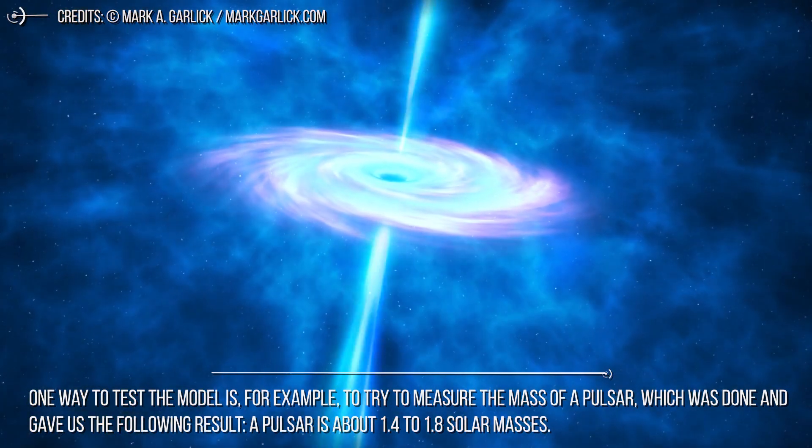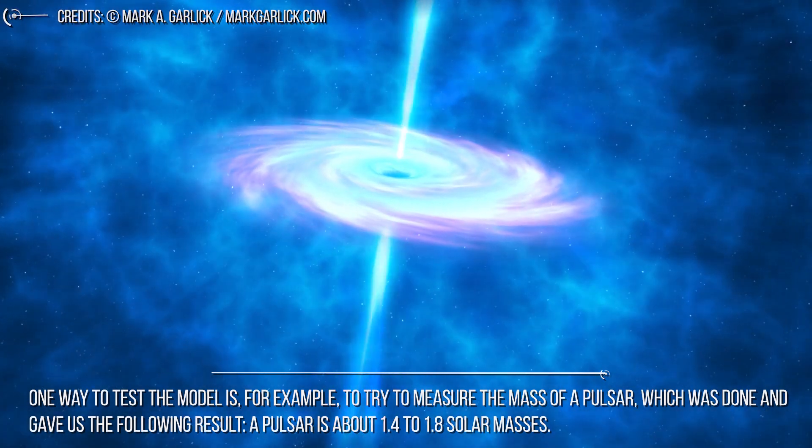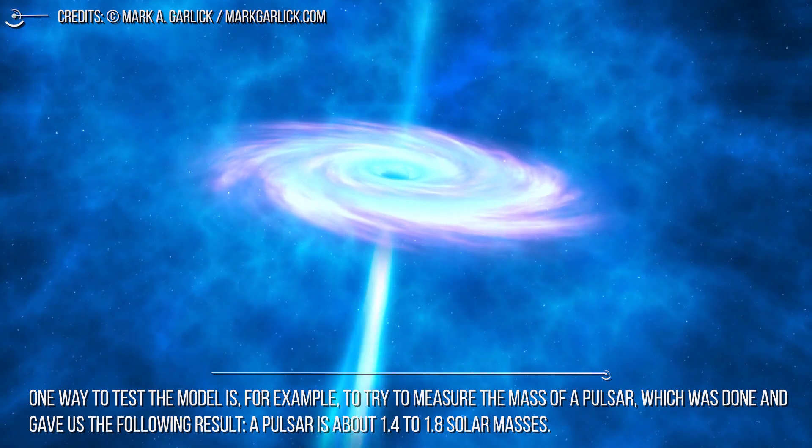A pulsar is about 1.4 to 1.8 solar masses. Surprisingly, or not, this was just what was predicted by the theory.